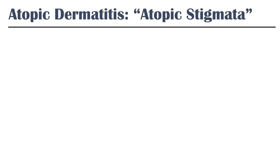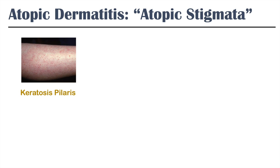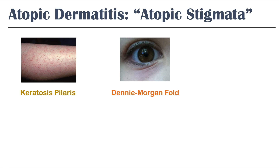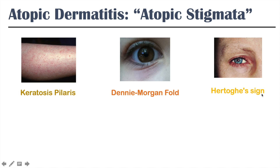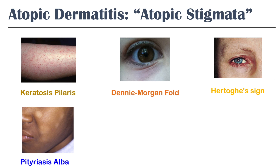Atopic dermatitis can present with characteristic skin findings called atopic stigmata. These include keratosis pilaris — colloquially called 'chicken skin,' presenting as small raised red dots on the body. There is also the Dennie–Morgan fold, a wrinkling effect with skin color change under the eyes, and Hertoghe's sign, which is an absence or thinning of the lateral eyebrow. Another finding is pityriasis alba — a whitening or lightening of the skin tone in certain areas, such as the face.